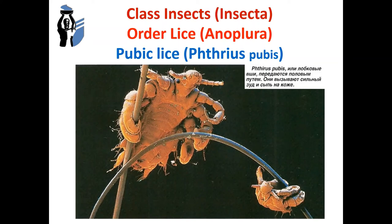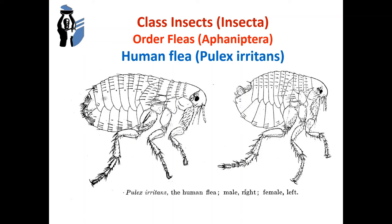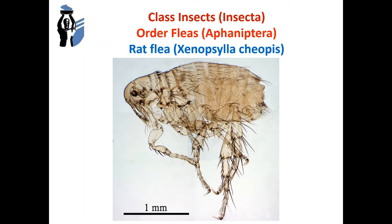The next order of class insects is order Siphonaptera — fleas. Species include the human flea and rat flea. Fleas are small, wingless, blood-sucking insects with well-developed jumping legs. In the natural environment, fleas are the main vectors of plague pathogens. The infection of humans occurs by contamination. To kill fleas, insecticides are used.